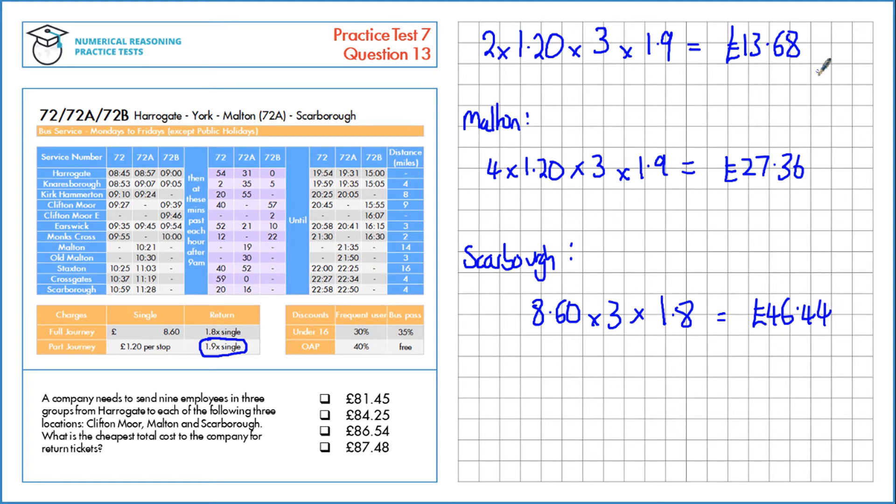We need to calculate the total cost, so we add these three up, which gives us a total cost of £87.48.